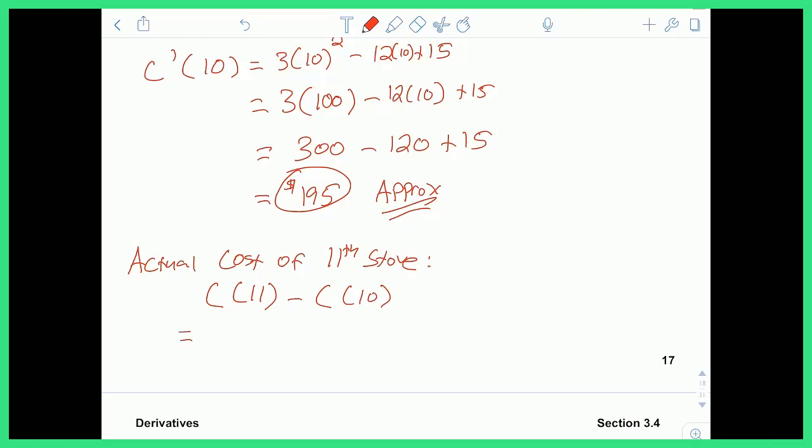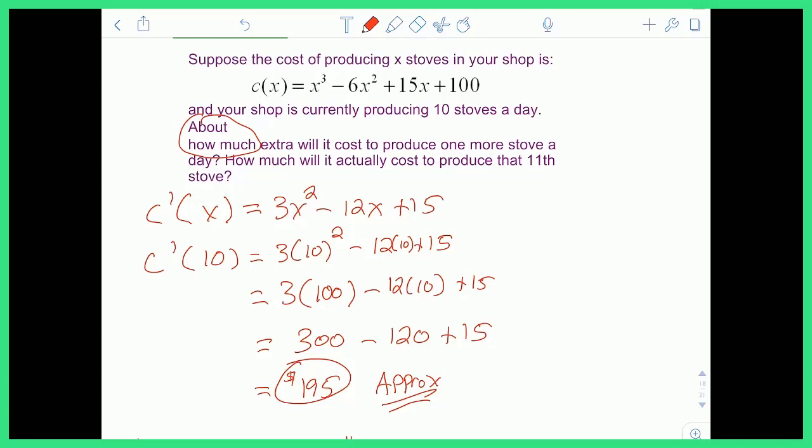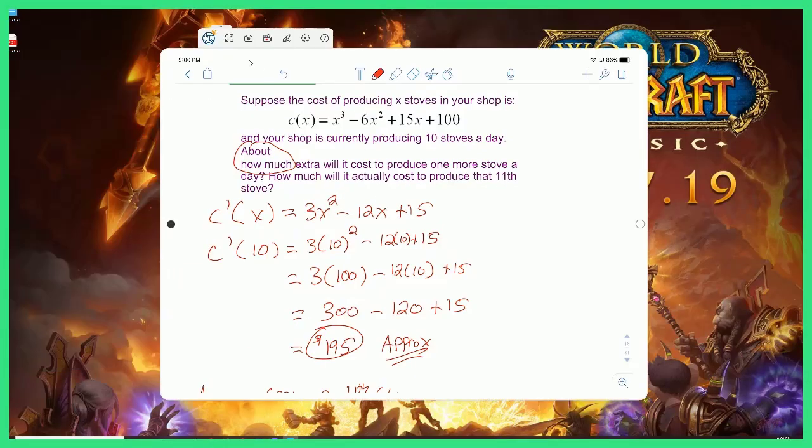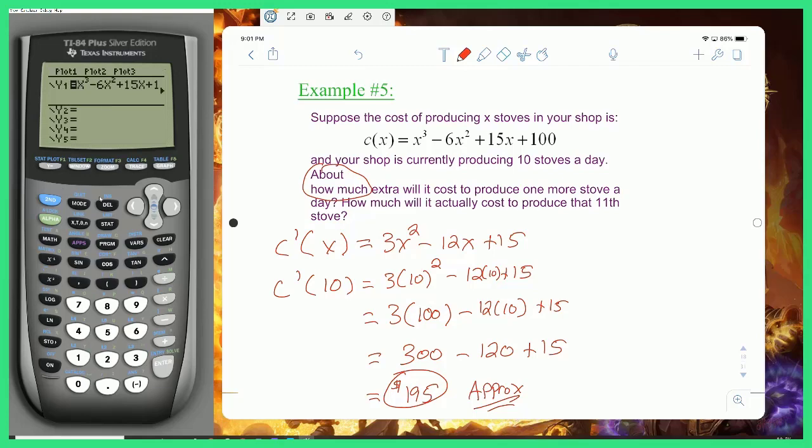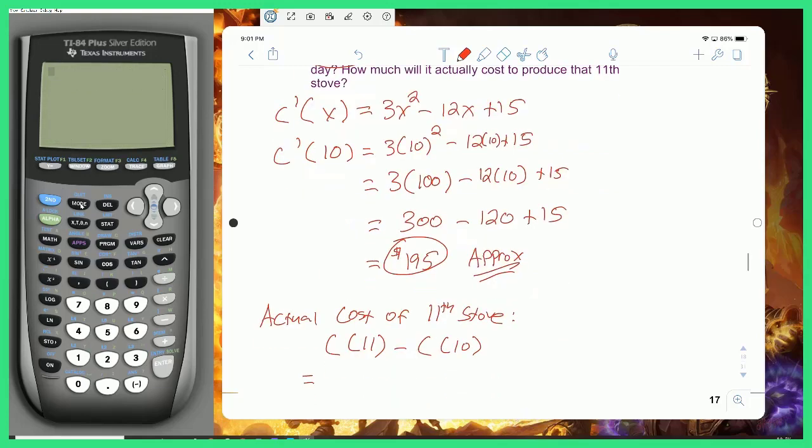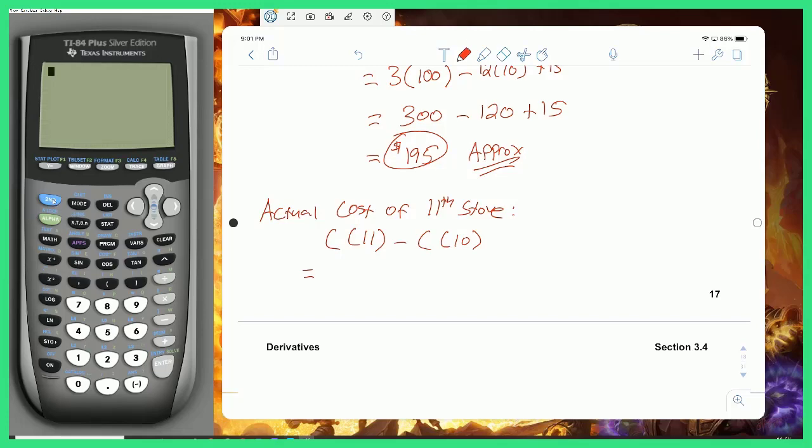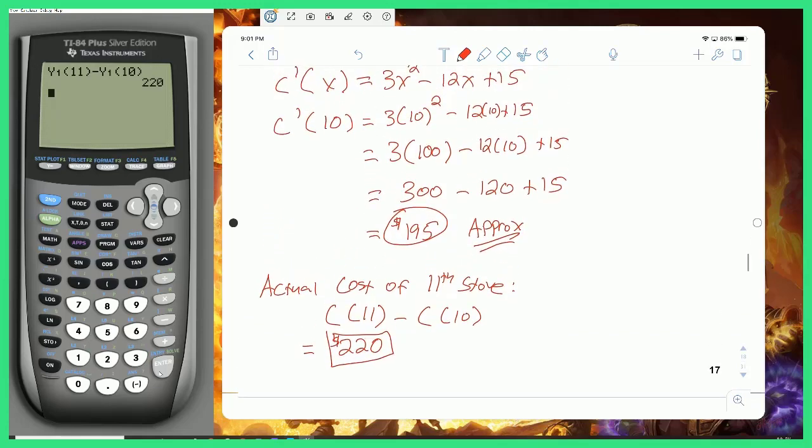And this, if I calculate, I just have to plug 11 into my cost function, so let's actually just grab a calculator. So we have this in Y1. Let's now calculate the cost of the 11th item. So we'll go to VARS YVARS function Y1 of 11 minus VARS YVARS function Y1 of 10. And we get an answer of 220, $220.